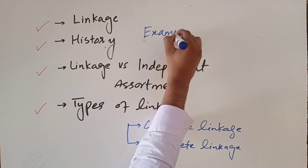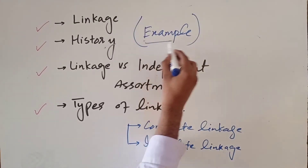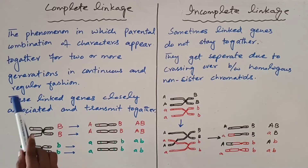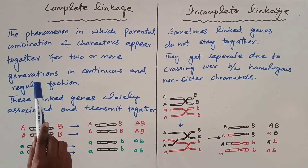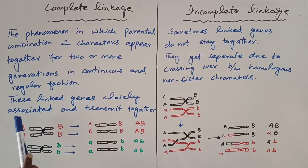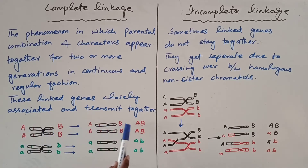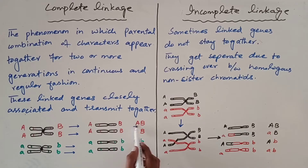Before going towards the examples of complete and incomplete linkage, I am repeating their definitions. Complete linkage is the phenomenon in which parental combination of characters appears together for two or more generations in a continuous and regular fashion. These linked genes are closely associated and transmit together — they will never separate from each other. Capital A and capital B are linked genes, and in gametes they will not separate. Similarly, recessive genes small a and small b will not separate, so parental combination is retained in the gametes.